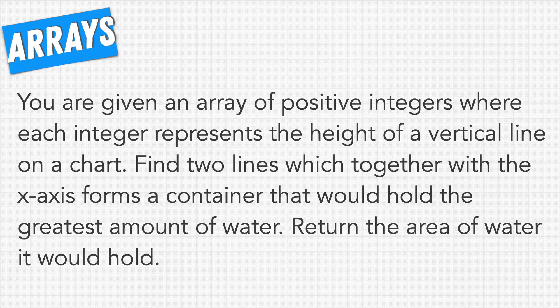The question asks: you are given an array of positive integers where each integer represents the height of a vertical line on a chart. Find two lines which together with the x-axis forms a container that would hold the greatest amount of water. Return the area of water it would hold. Now I know this question seems a little bit confusing at first but let's visualize what the question is asking us.